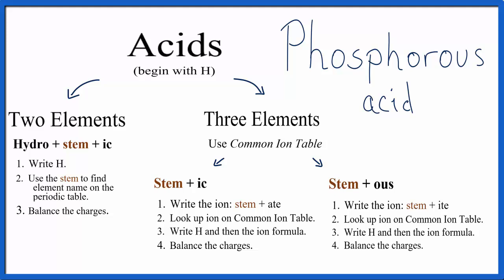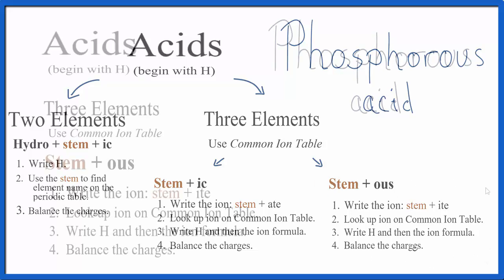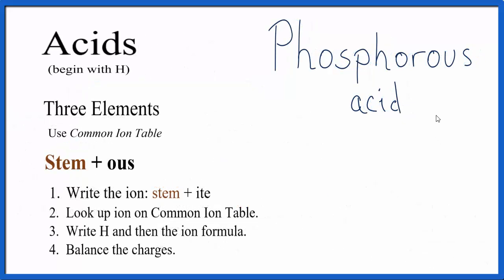This is the last set of rules we need to learn to write formulas for acids. When we look at phosphorous acid here, we can see there's no hydro in the beginning. It ends in ous, so these are the rules we'll use. We'll write the stem, and phosphorus is a bit of an exception. The stem we just write P-H-O-S-P-H. We leave out the O-R. Instead of O-U-S, we're going to write I-T-E.